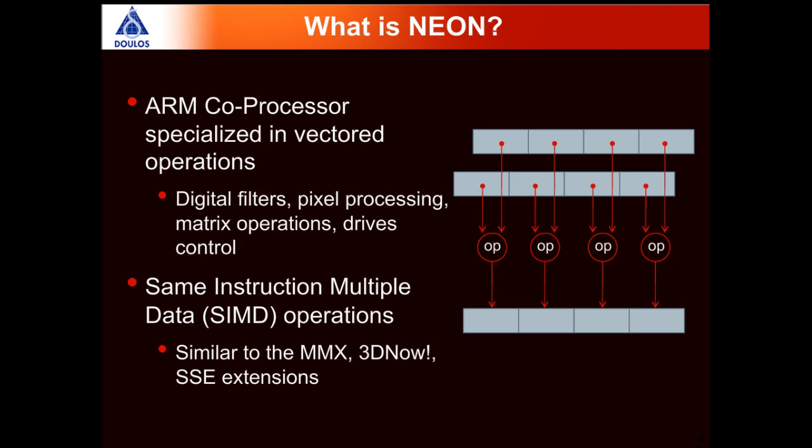These kinds of instructions appeared inside ARM processors around the ARM 11. With the introduction of the Neon co-processor, we now have a much more sophisticated set of instructions as well as much wider sets of operands to perform large vector operations. Similar architectures exist in other processors such as MMX, 3DNow!, or SSE extensions.